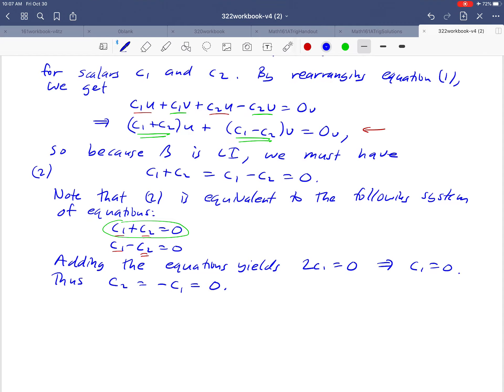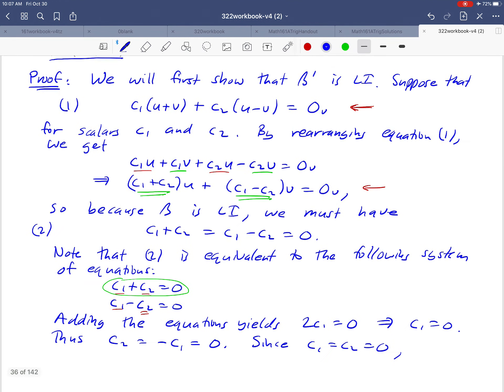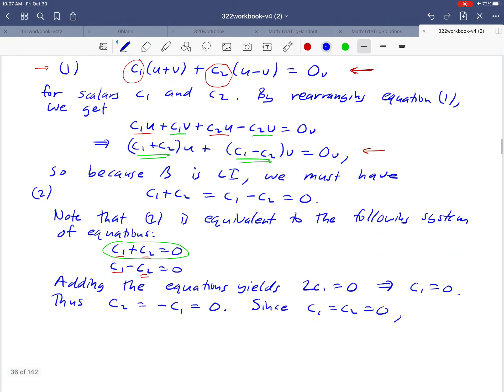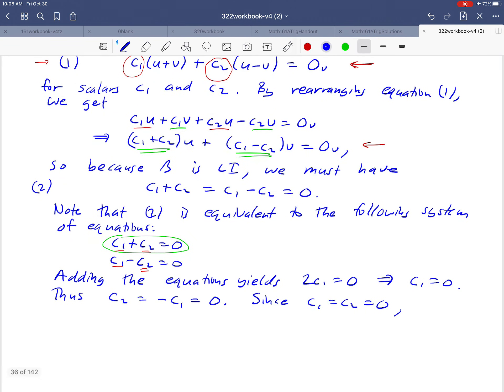What have we demonstrated here? We just proved that both c₁ and c₂ are equal to zero. Looking back at equation (1), we just proved that these two numbers both have to be zero, so we've just demonstrated that (1) has only the trivial solution. There's our linear independence.